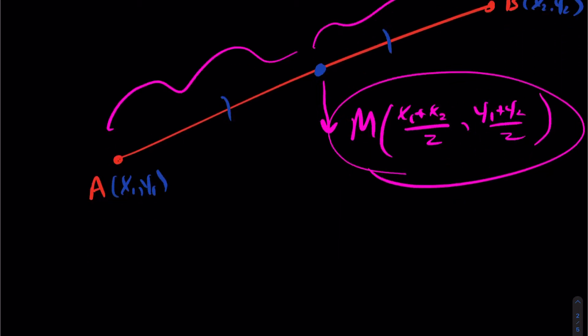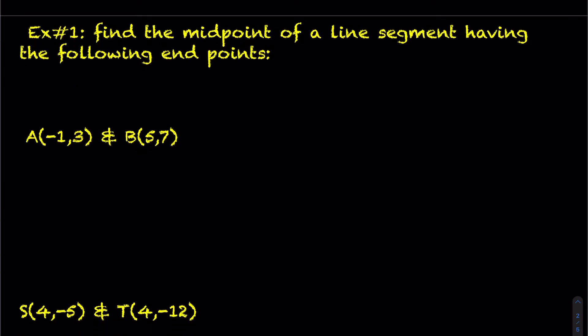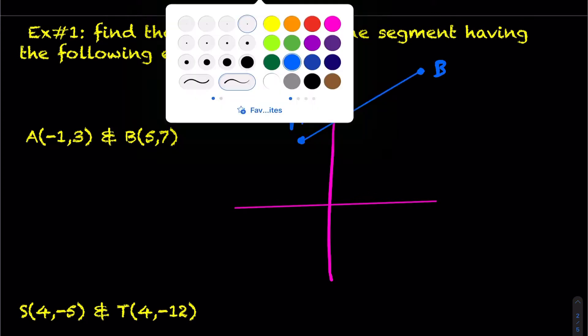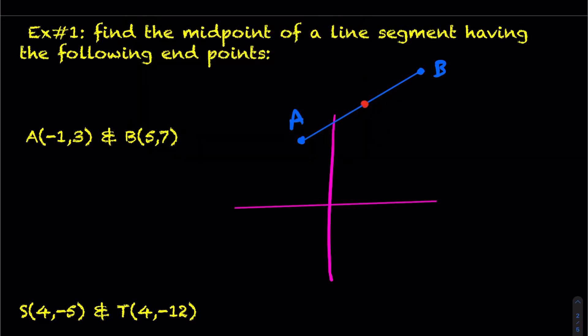Let's take a look at some examples. The first example says: find the midpoint of the line segment having the following endpoints. I encourage you to do a rough sketch of where these points are, because as you apply this formula, it's good to have a reference. So point A is roughly here, and point B is somewhere up here.